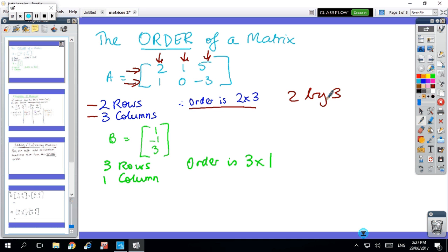We use two by three or two times three, but two by three is the order of the matrix. In this second matrix B, I have three rows and one column, so the order is a three by one. So that's the first part, copy that and come across when you're ready.